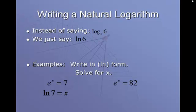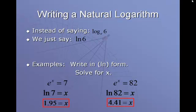If I was going to write e to the power of x equals 82, my base is e, so I don't say log base e. I say natural log of 82 equals x. Natural log of 7 when you evaluate it is 1.95. Natural log of 82 when you evaluate it is 4.41. So make sure you can evaluate each one of those and you can get the correct answer.